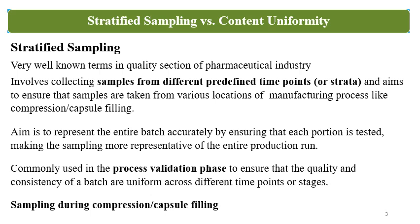Stratified Sampling aims to represent the entire batch accurately by ensuring that each portion is tested, making the sampling more representative of the entire production run. Stratified Sampling is used for process validation — it is important to understand that in the process validation phase, Stratified Sampling ensures that quality and consistency of the batch are uniform across different time points or different stages.